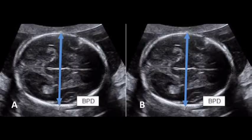It is a measurement of the diameter of a developing baby's skull, from one parietal bone to the other. Biparietal diameter is used to estimate fetal weight and gestational age. It is the maximum diameter of a transverse section of the fetal skull at the level of the parietal eminences.